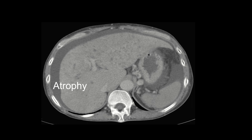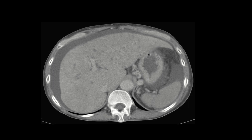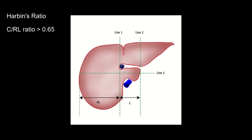To simplify, most commonly you're going to see right lobe atrophy and hypertrophy of the caudate and left lateral segment. You can visually pick this up — it's going to look like the picture here with hypertrophy of the caudate lobe and left lateral segments and atrophy of the right lobe. Some people also use measurements and ratios, most classically Harbin's ratio, which looks at the caudate to right lobe ratio. Greater than 0.65 was considered abnormal and pretty accurate for determining if cirrhosis is present.